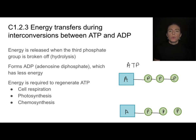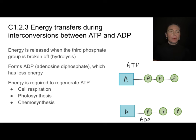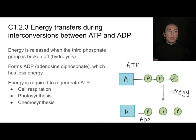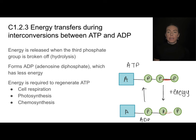To get that energy out of ATP, you break the bond between the second and third phosphate group. In doing that, you no longer have ATP — you have ADP, adenosine diphosphate. You can use that energy to power cell processes. If I want to go the other way and regenerate ATP — turning ADP back into ATP — I need to form that bond again, which requires putting energy in.